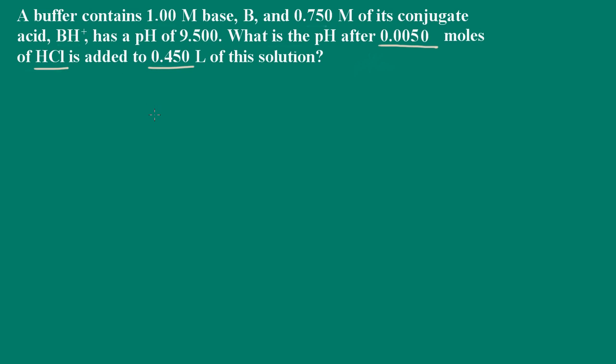So we have a strong acid that's being added to a buffer solution. So that means that the acid is going to react with the base. So first thing we need here is to determine the pKa. And we can do that very easily with the information we have using the Henderson-Hasselbalch equation.